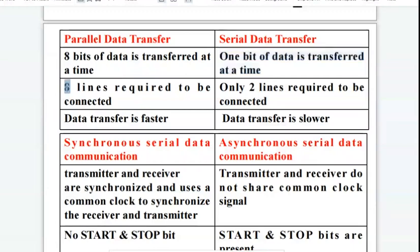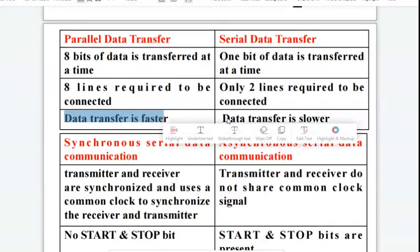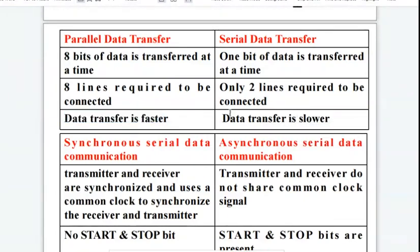Eight lines are required to be connected in parallel data transfer. In serial data transfer, only two lines are required to be connected. As we have seen in the interfacing diagram, only two lines, TXD and RXD, are used in serial data transfer. As 8 lines are used in parallel data transfer, data transfer is faster. In serial data transfer, the data transfer is slower.